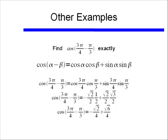Doing a multiplication and then adding, we find that cosine of 3 pi over 4 minus pi over 3 is equal to negative square root of 2, plus square root of 6, all over 4.